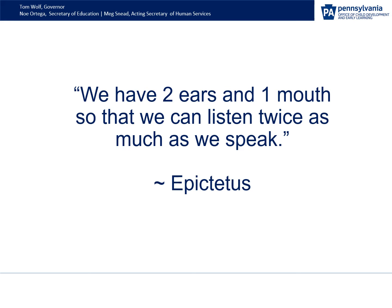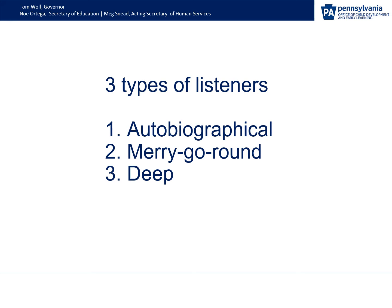We have two ears and one mouth so that we can listen twice as much as we speak. Listening is the most important part of communication. There are three different types of listeners: autobiographical — when you hear things filtered only through your own experience; merry-go-round listening — when you're biding your time until it's your turn to speak, making it hard to fully hear what's being said; and deep listening — when you're genuinely trying to understand and learn something new.